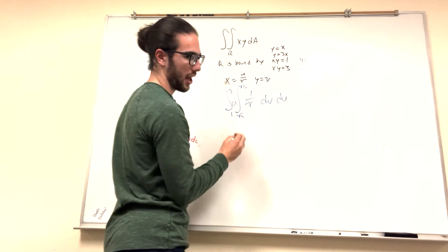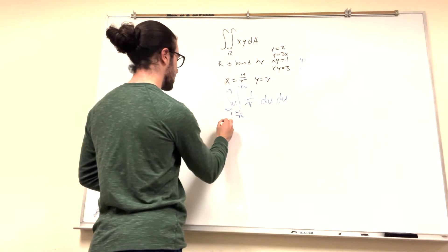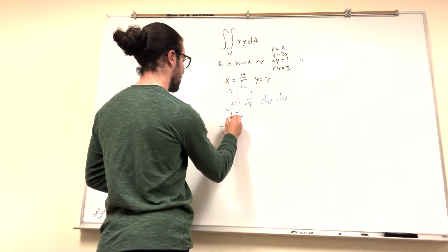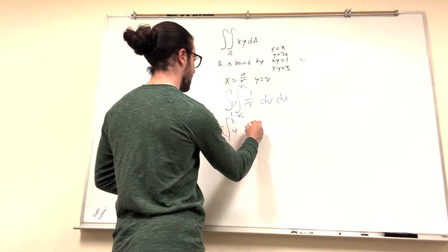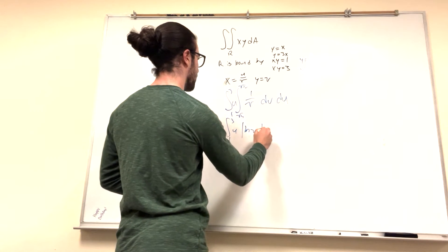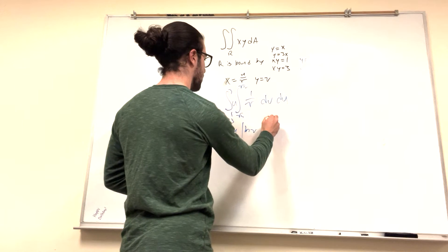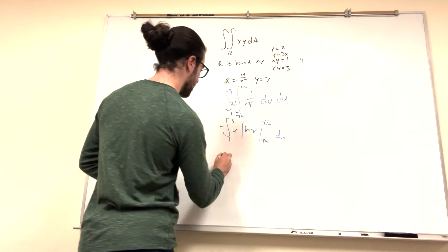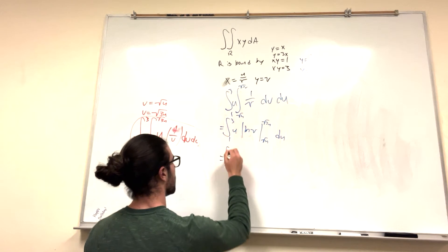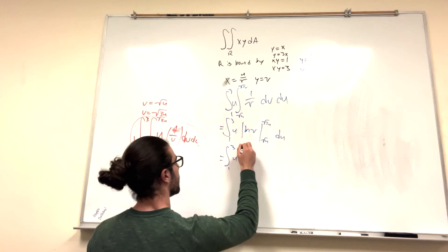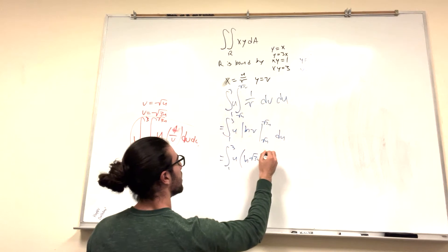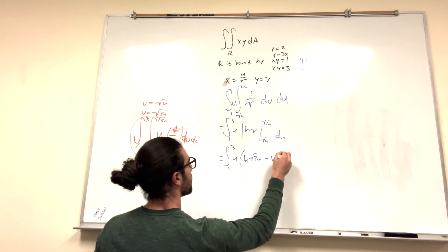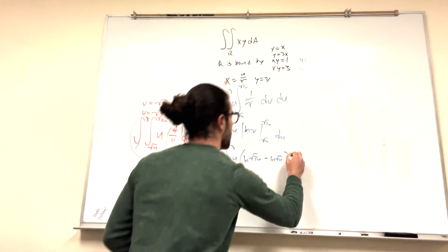Square root of 3u. This becomes ln of v. So this is equal to 1 to 3 of u times ln of v from square root of u to square root of 3u. u equals 1 to 3 of u. And then it becomes. So it's ln of the square root of 3u minus ln of the square root of u, du.